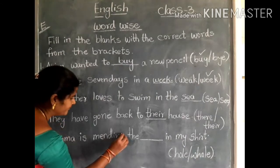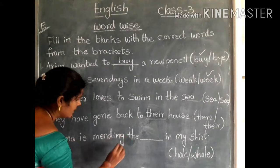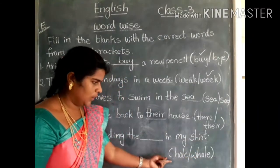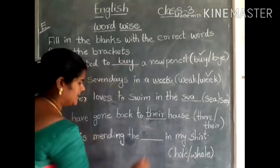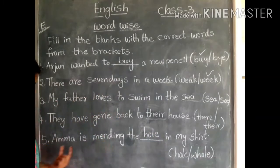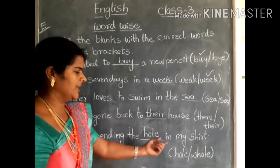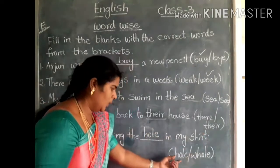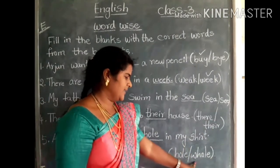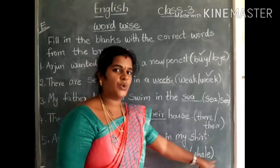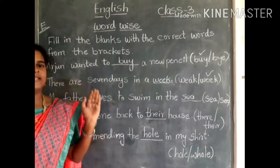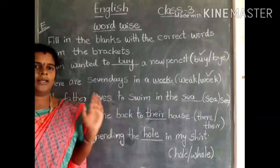Fifth sentence: There is a hole in my shirt. The answer is H-O-L-E — hole. There is a hole in my shirt. Hole means an opening in something. And 'whole' — W-H-O-L-E — means entire or all.